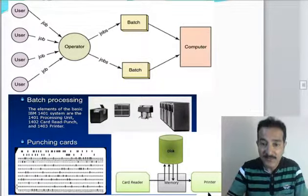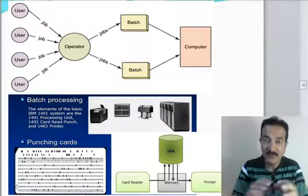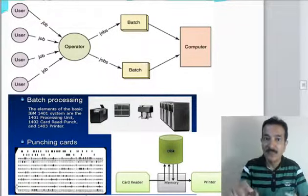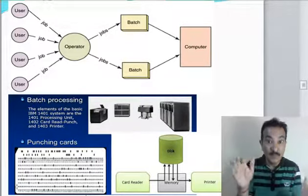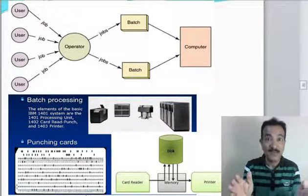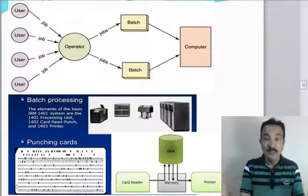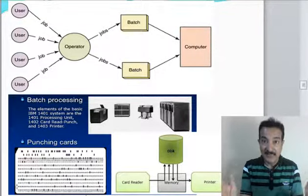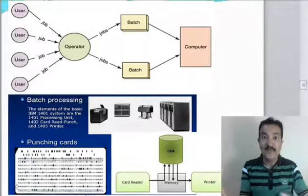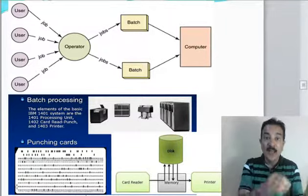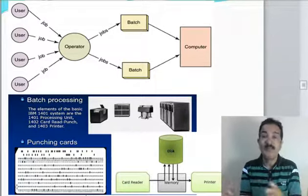To summarize, batch processing does only one job at a time. You accumulate all similar or same-type work — for example, feeding all employee data from punch cards is one batch. Taking that data and printing it to the printer is another batch.